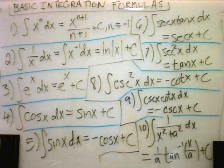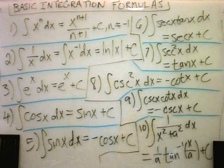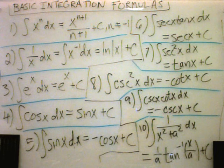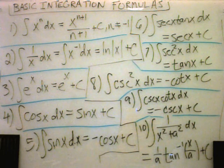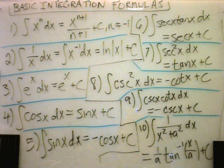Number 3 says if you find the anti-derivative of e to the x, you get just e to the x right back. If you find the anti-derivative of cosine, you get sine. The anti-derivative of sine is negative cosine. Be careful there about the negative.